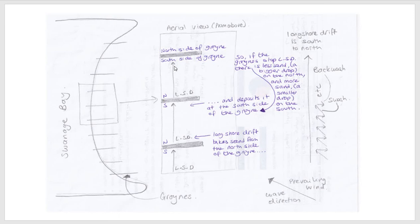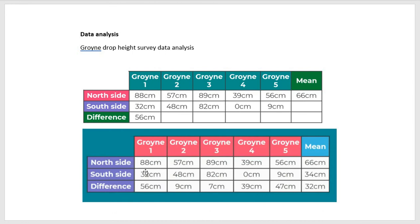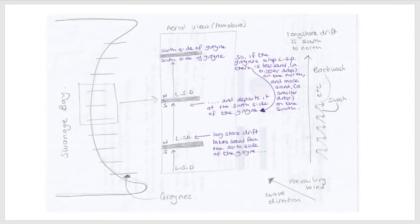Now if we look back at our data, that's what we should see, and if that is what we see, then our hypothesis has been proven because the sand will have been taken from here and it will have been stopped here. And we can see from our data that the north side has the bigger drop and the south side has the smaller drop, and that is the case all the way along. We've got one where it's a little bit similar — the drop isn't as big — but even so it's still following the right pattern. So on each one of these there is less sand on the north and there is more sand on the south, meaning that our hypothesis using our primary data has been proven. The groins are working and the groins are trapping the sand.